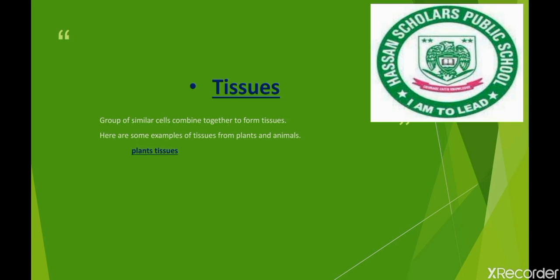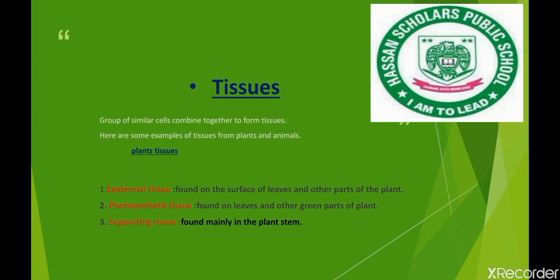First, we will talk about plant tissues. The first type is the epidermal tissue, which is present on the outer surface of leaves and other parts of the plant. The second type is photosynthetic tissue, found on leaves and other green parts of the plant. The third type is supporting tissue, found mainly in the plant stem to support the plant and make it a strengthened structure.